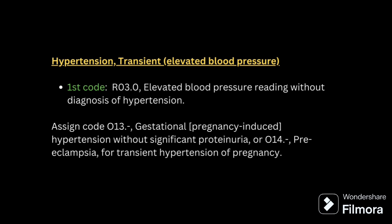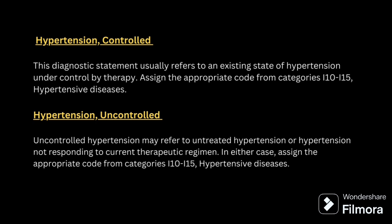Hypertension transient, otherwise called elevated blood pressure, applies when a patient does not have a diagnosis of hypertension but blood pressure is high for a short period. The code for that is R03.0. Hypertension controlled means hypertension is controlled by treatment — check from I10 to I15. Hypertension uncontrolled means hypertension is not responding to treatment — also code from I10 to I15.